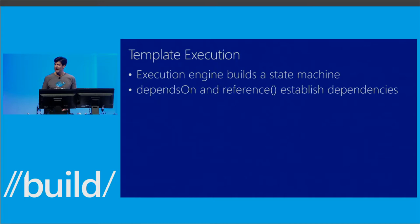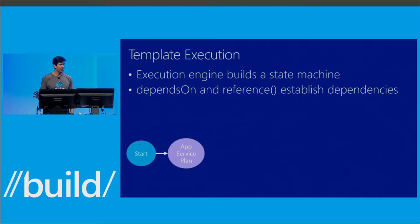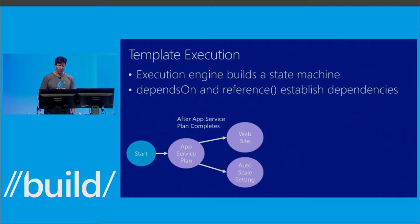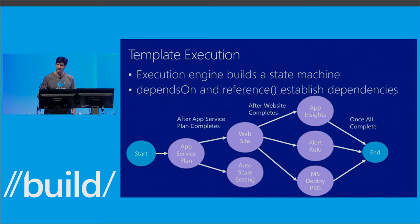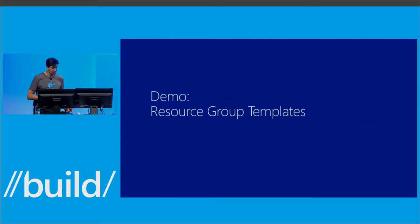With a declarative approach, Azure Resource Manager can examine relationships between resources in the template and find the fastest path forward. For example, I've got an app service plan — I deploy a website, add auto-scaling, and then resources with dependencies like App Insights, an alert rule on CPU usage, and an MS Deploy package activate after the website comes up. Some deployments run in parallel, others serial — you don't have to worry about that. Simply by specifying the relationships, Azure Resource Manager takes care of the execution order for you.